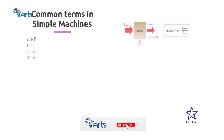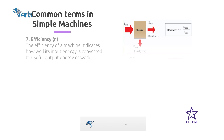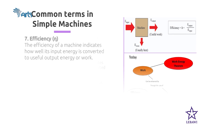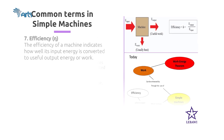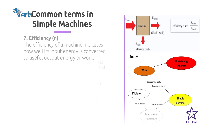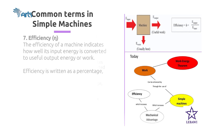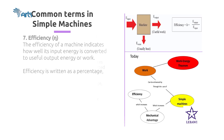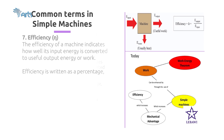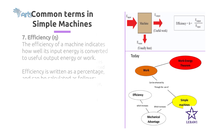The last term is efficiency. Efficiency of a machine indicates how well its input energy is converted to useful output energy or work. Efficiency is usually expressed as a percentage. There are two different methods that can be used to calculate the efficiency of a machine.